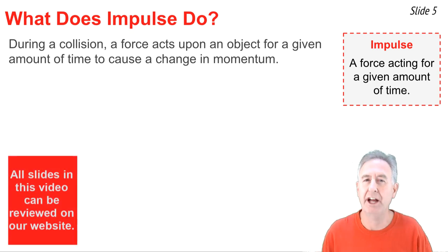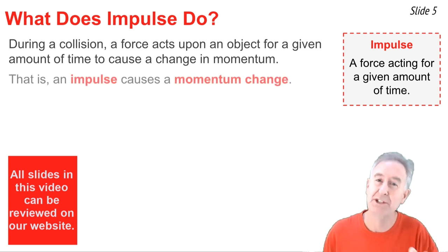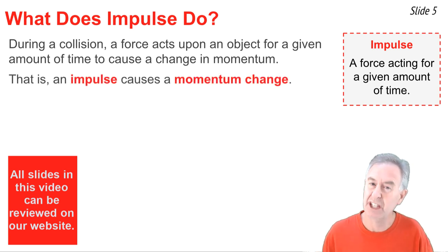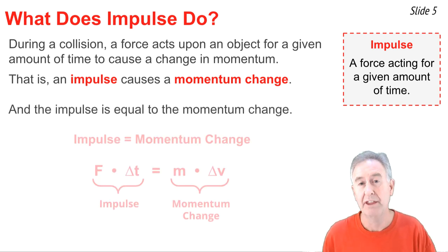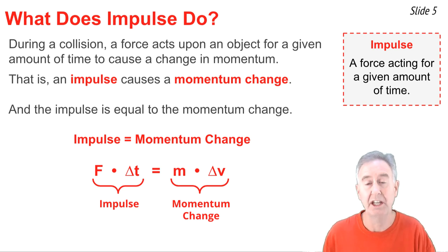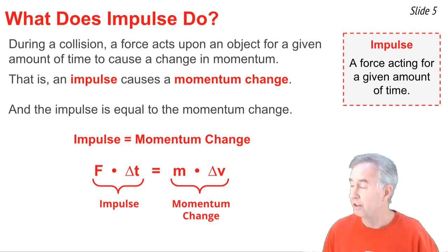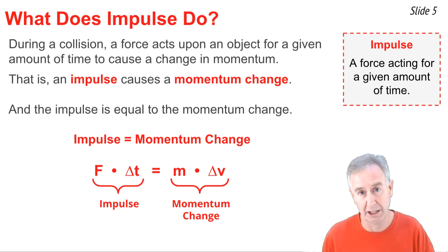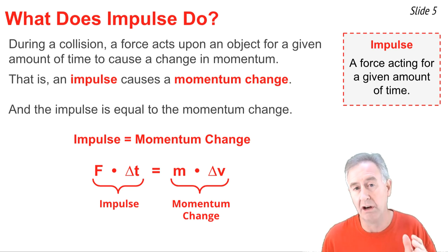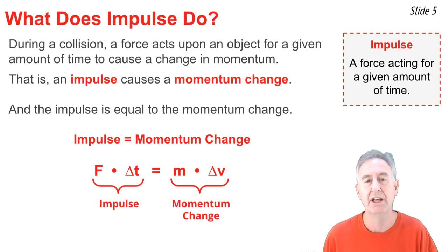During a collision, a force acts upon an object for a given amount of time — that's what we call impulse — in order to cause a momentum change. An impulse causes a momentum change, but it's even deeper than that, because the impulse is actually equal to the momentum change. That is, F times Δt equals m times Δv. The left side is the impulse; the right side is the momentum change. F is the force, Δt is the collision time over which that force acts (often very short, on the order of milliseconds), m is the mass, and Δv is the velocity change.